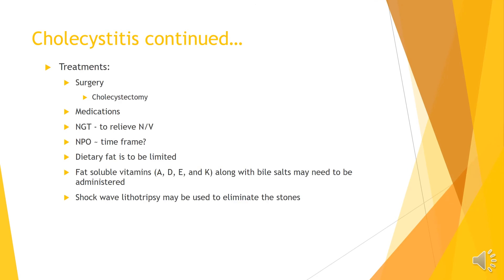There are multiple treatments to alleviate these issues in our patients. A cholecystectomy can be done laparoscopically, with a few small incisions. If there are problems and it cannot be completed laparoscopically, it may become an open cholecystectomy. You will see different postoperative treatments depending on whether the patient had a laparoscopic versus an open cholecystectomy.